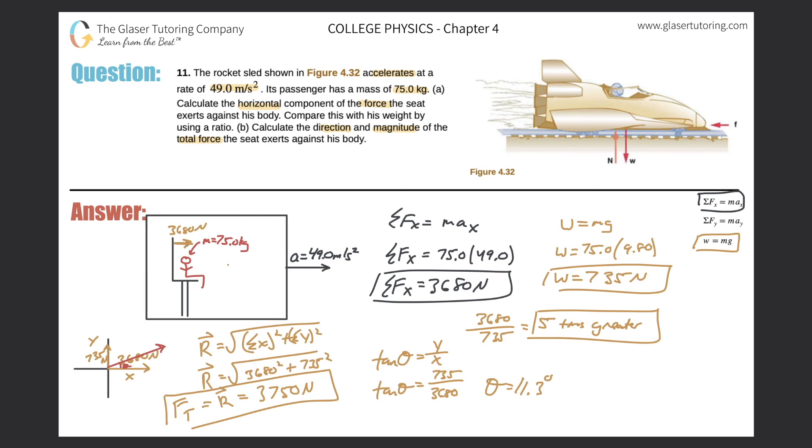So this theta value will then be 11.3 degrees north of east. So that would be these two boxed answers right here would be a complete description of the magnitude and the direction of the total force that seat exerts. The total force is 3,750 newtons at 11.3 degrees north of east.